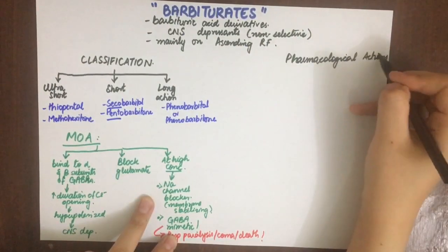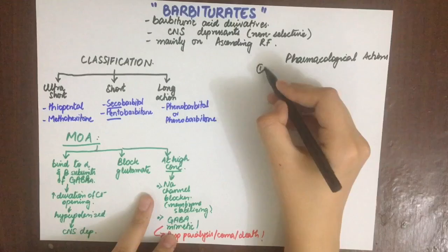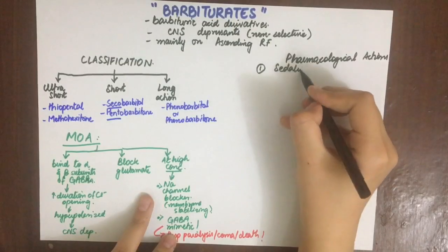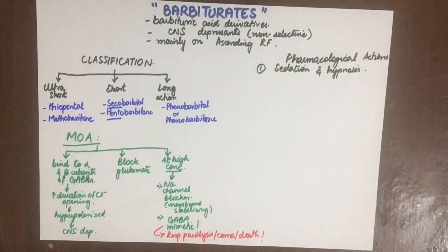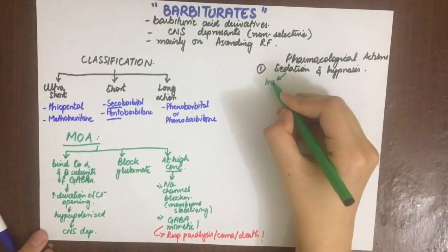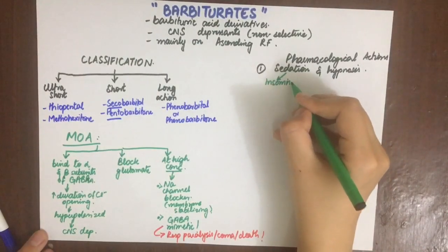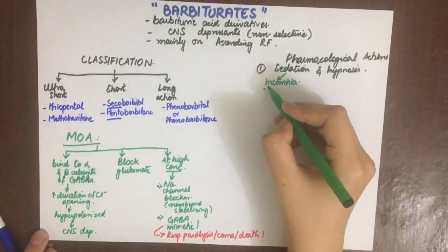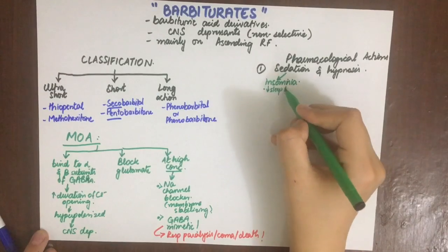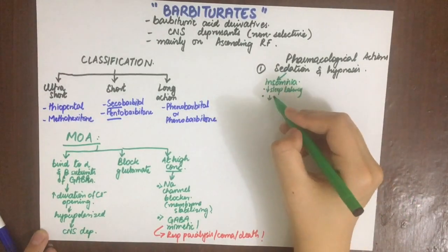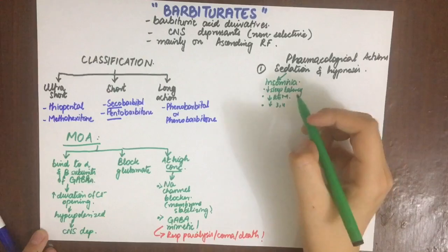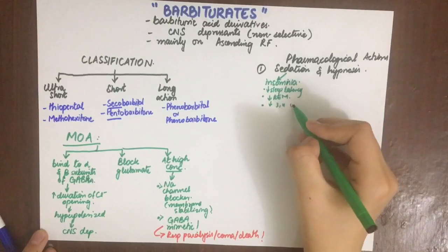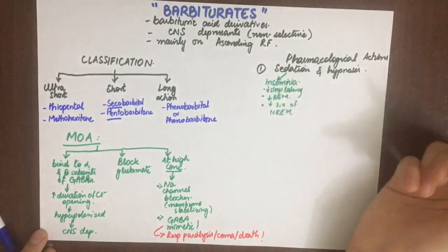Let's see some pharmacological actions. The main action is sedation and hypnosis. One use is in insomnia: barbiturates decrease sleep latency, decrease REM sleep, and decrease stages three and four of non-REM sleep.